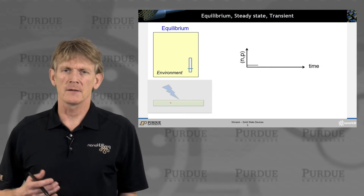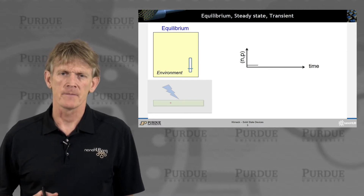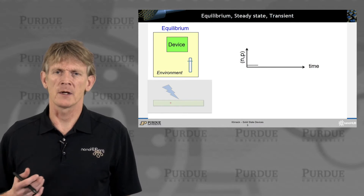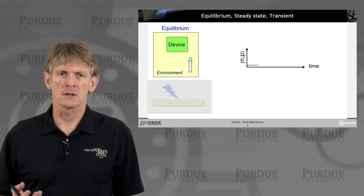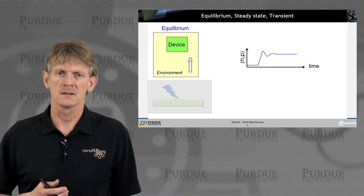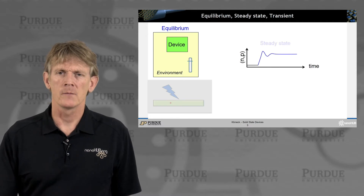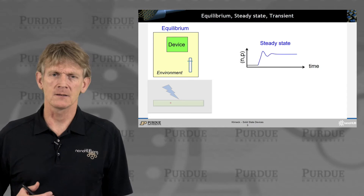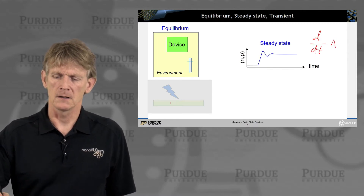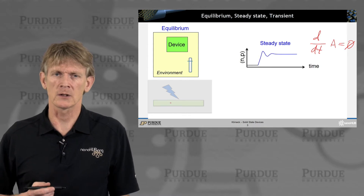Let's assume you have some device in equilibrium. You have some environmental variable, and you can measure electron and hole density. If you place this device in an environment and change some parameter — some voltage or some temperature — there will be some transient features, and eventually you reach steady state as a function of time. We call that steady state, meaning there's no change in time anymore, so d/dt of all quantities is zero.